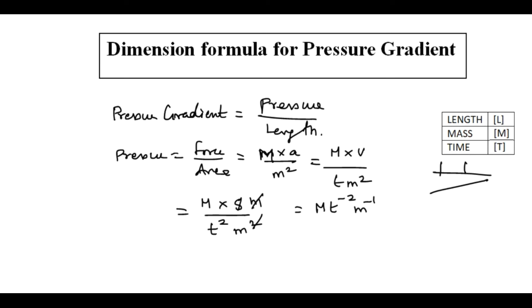Now I substitute the dimension formula for mass, so capital M, time t power minus 2, and meter, that is length l power minus 1. This is the dimension formula for pressure.